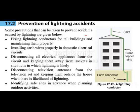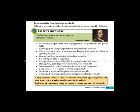Disconnect all electric appliances from the circuit and keep them away from sockets when lightning is likely. You can also disconnect television antennas from the television set and keep them outside the house during times when there is a probability of lightning. You should also identify safe sites when planning outdoor activities — sites where it is less likely for lightning to strike you.